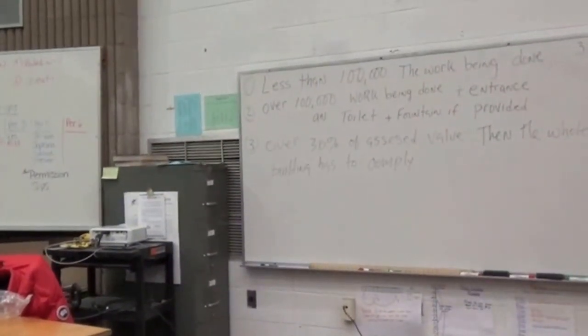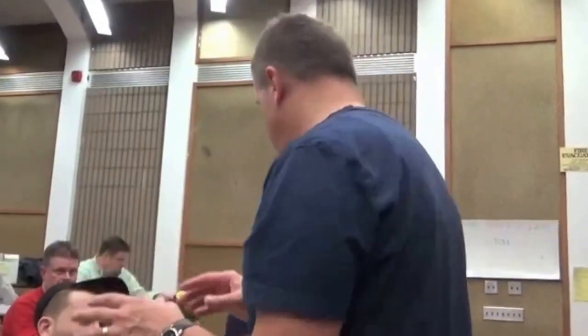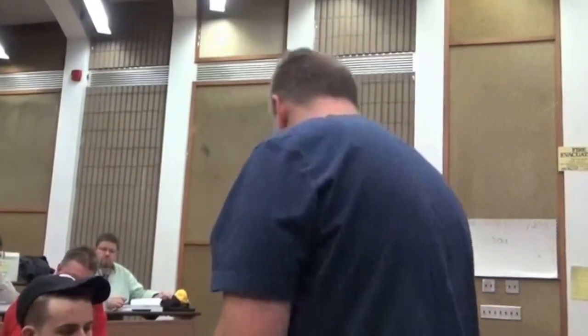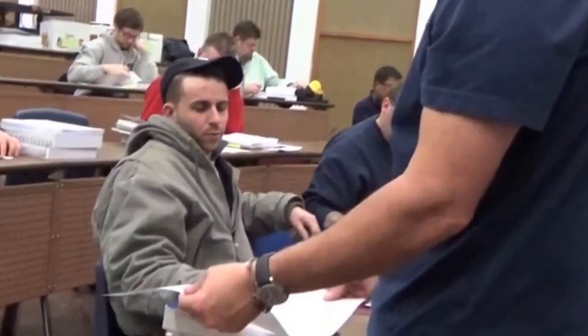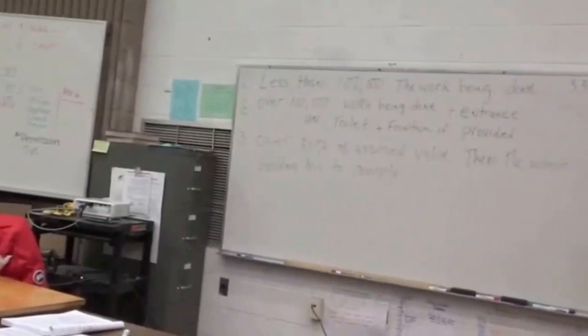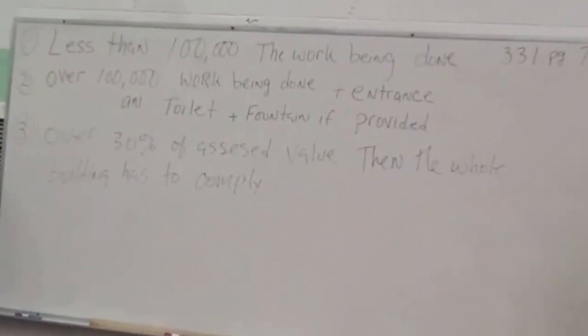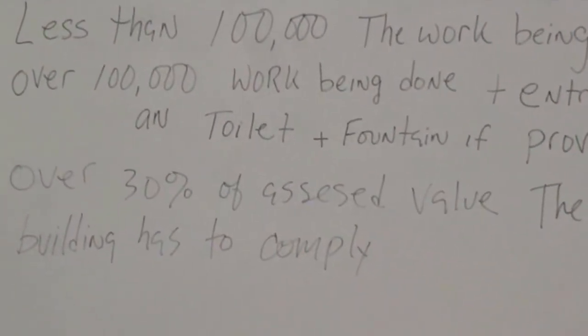The AAB book is the only book that deals with money, and you're going to be asked questions on this formula — there's no doubt about it. On page seven, section 331, here it is in a nutshell: Number one — the first thing in the formula is less than a hundred thousand dollars in work, only the work being done has to conform.